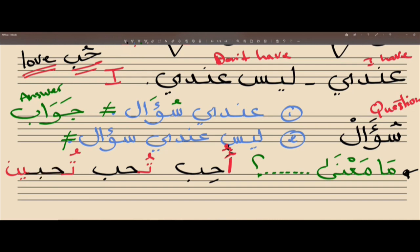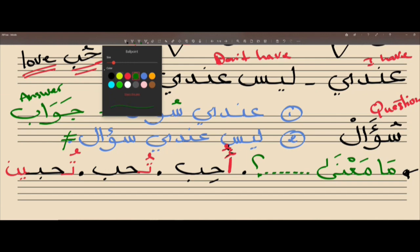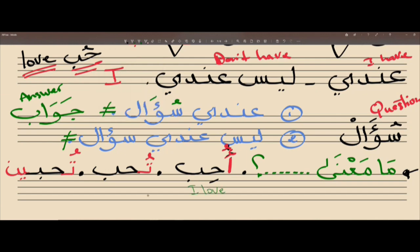So we would say تحب - bin. Repeat again? تحب - bin. Mumtaz. Jameel jidden. Let's have each one of you read all three together. Yalla, tafaddali Emalia. أحب, تحب, تحبين. Jameel jidden. Tafaddali Julia. أحب, تحب, تحبين. Jameel jidden. Mumtaz. Let me write the translation right underneath in a different color: I love, you love for masculine, and you love for feminine.